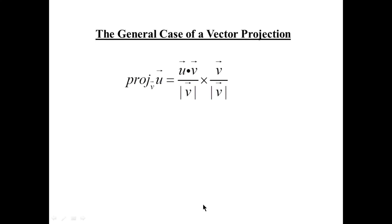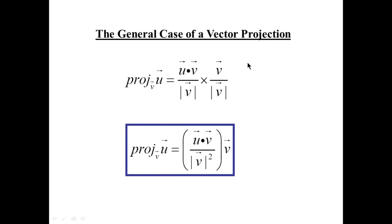The general case for the vector projection of U onto V: take the dot product U·V divided by |V|, then multiply by the unit vector V/|V|. The magnitudes multiply together and get squared in the denominator, giving the vector projection of U onto V as (U·V / |V|²) × V.